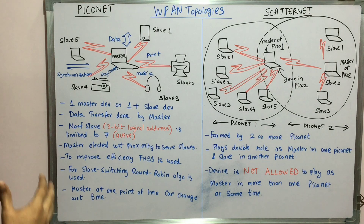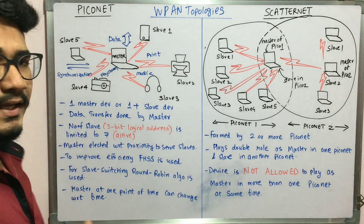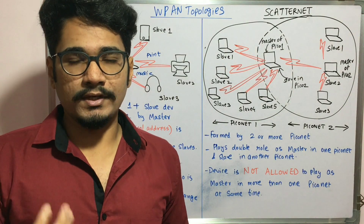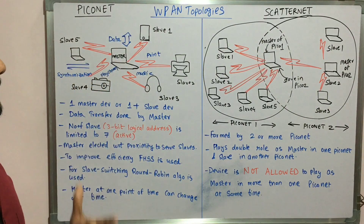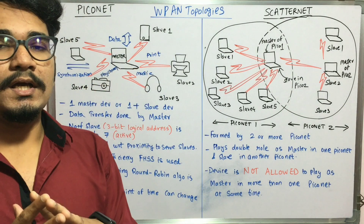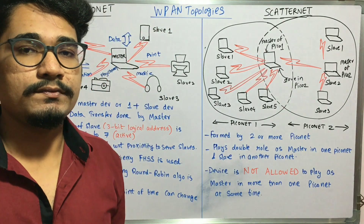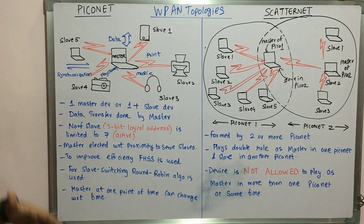The master is determined by an election process with respect to proximity to serve different slaves. Just like in your country you elect a president, in the same way the master here is elected based on the proximity of the slave devices to that master.